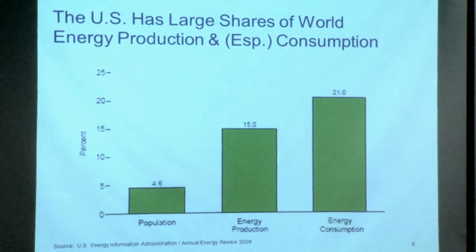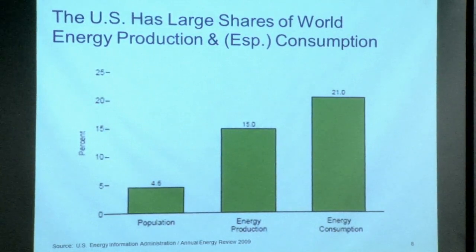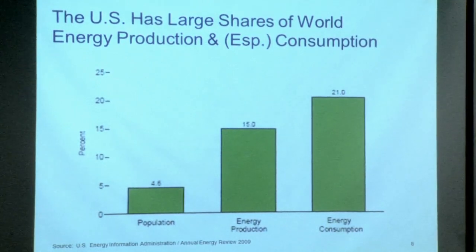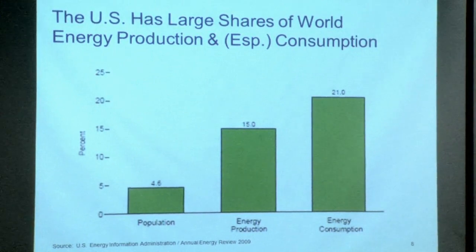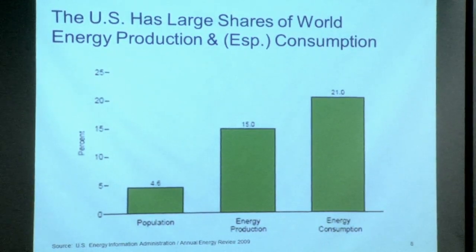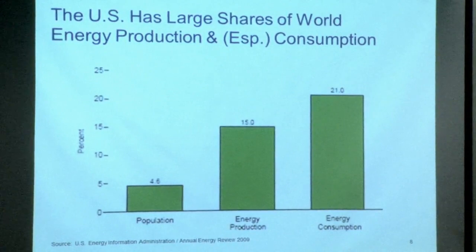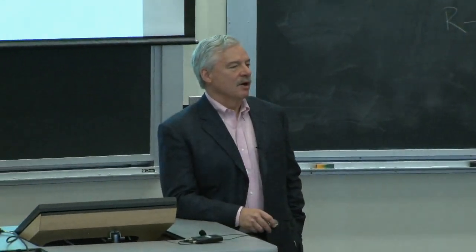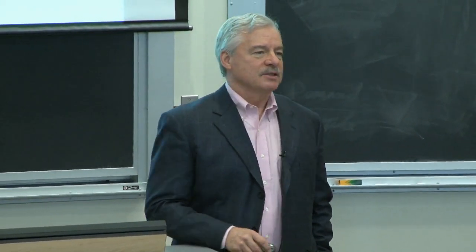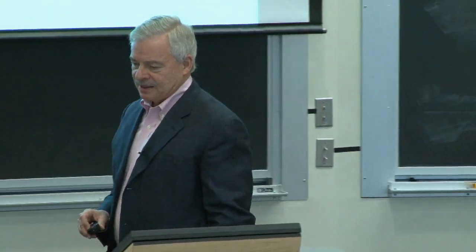In terms of the US — these are a year or two old, but they're about right. We're about 4.5% of the world's population. We produce about 15% of primary energy. We consume over 20%. Less than 5% of the world's population consuming more than 20% of the world's energy. A theme I will sound today is the whole world can't live like we do — the arithmetic doesn't work. Tom Friedman makes this point in the article on the reading list.